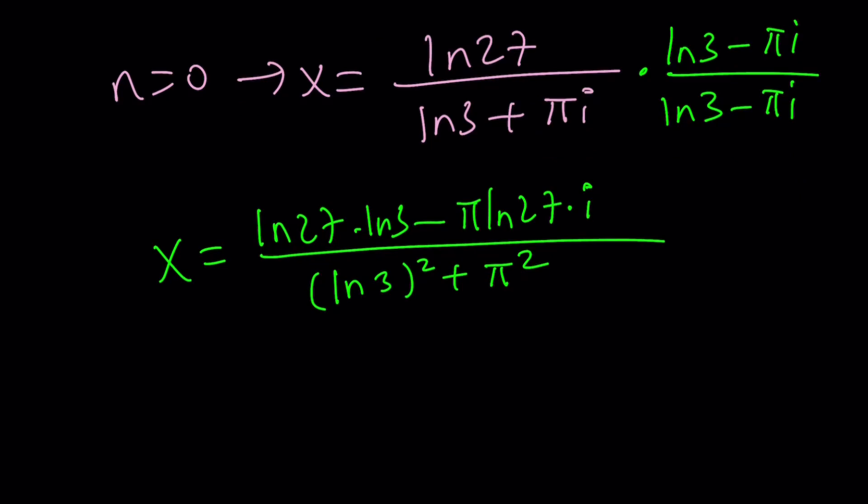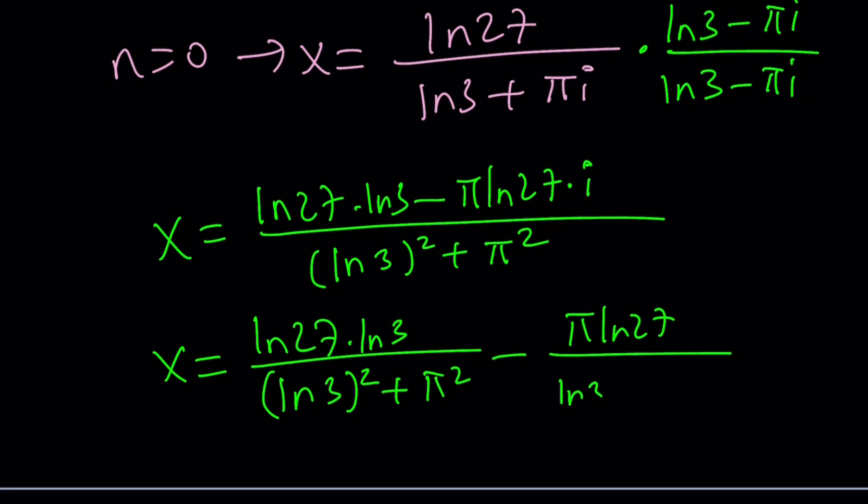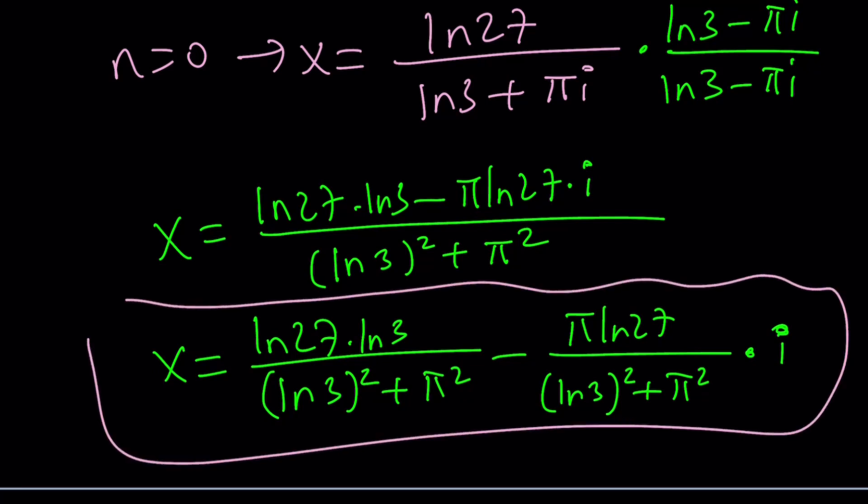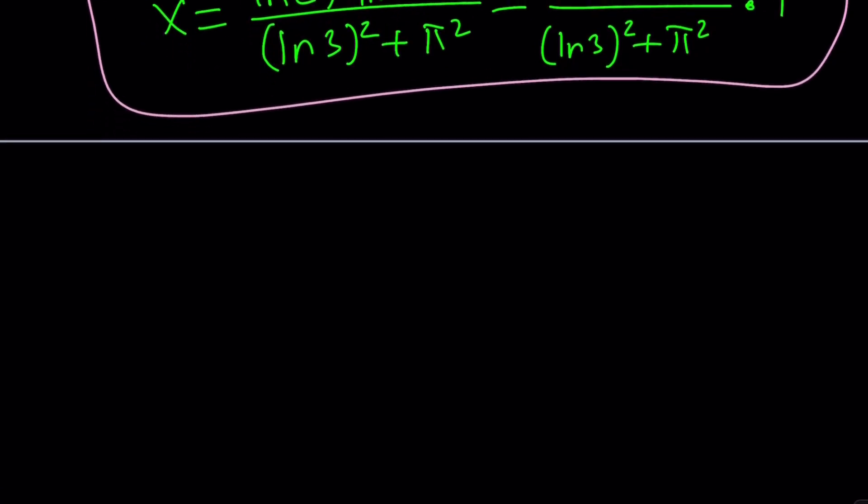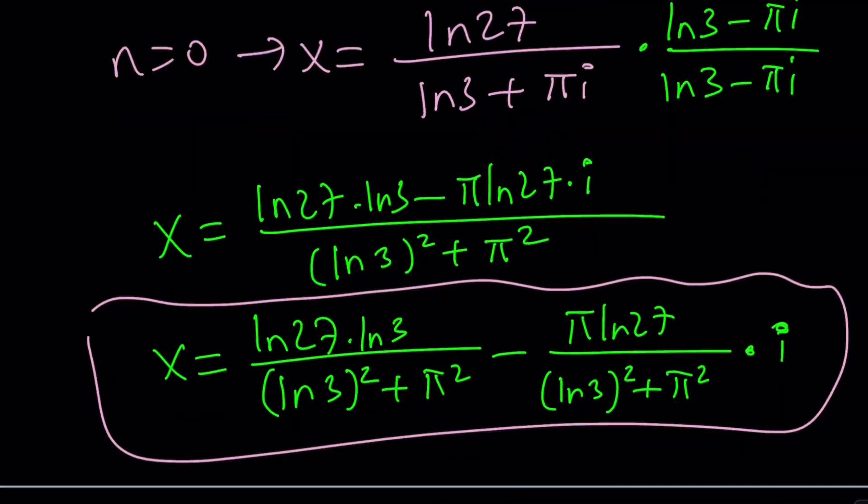Well, the problem is this is going to have a real part and an imaginary part. So we can separate those if you want. Pi ln 27 over ln 3 squared plus pi squared and then multiply by i. So we wrote x in standard form like this. Now let's go ahead and take a look at the result from Wolfram Alpha, which is probably going to look something like this. Let's take a look.